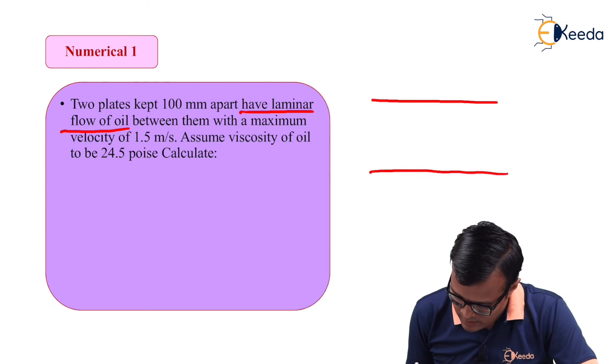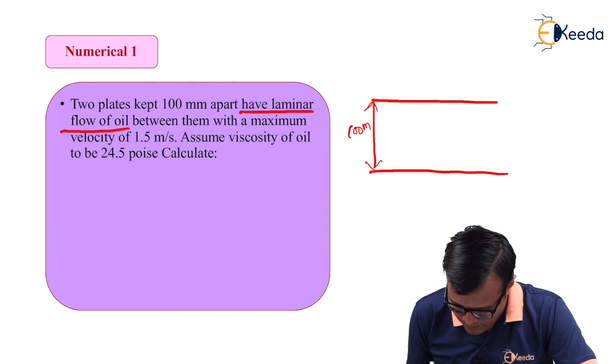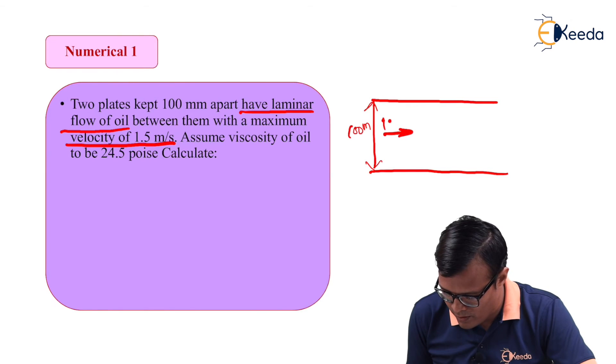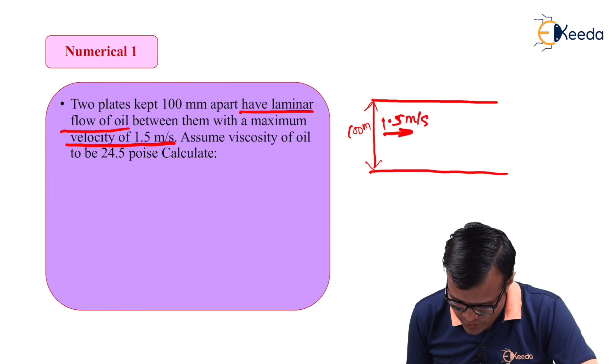So, two plates 100 mm apart, this gap is 100 mm, having maximum velocity of 1.5 m/s. This is 1.5 m/s. Assume viscosity of oil to be 24.5 poise.